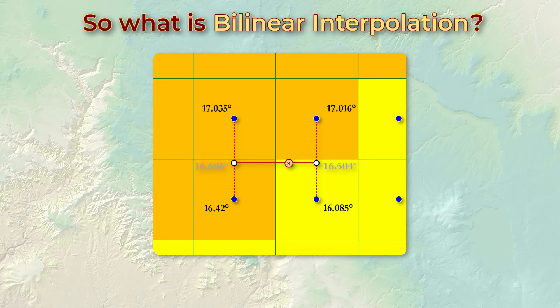Now we draw a line connecting these two locations and interpolate between them at the x coordinate of our sample point, interpolating between 16.696 and 16.504 gives us a final interpolated slope value of 16.572 degrees at our sample point.